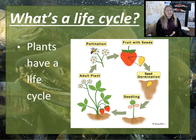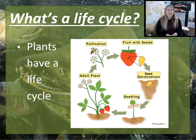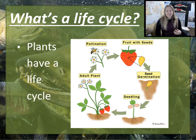What is a life cycle? A life cycle is the natural process of how an organism lives, grows, and dies. All living things have a life cycle. Plants have a life cycle — they start as seeds that germinate and then sprout into seedlings. They grow into an adult plant, and when their flowers are pollinated by a bee, they produce fruit. That fruit contains more seeds, which starts the cycle all over again.